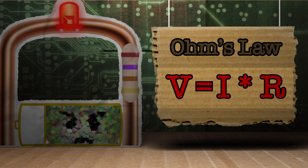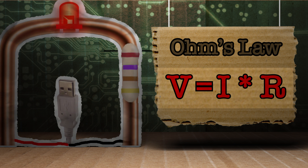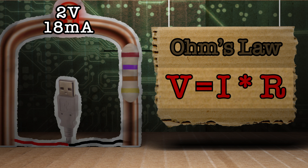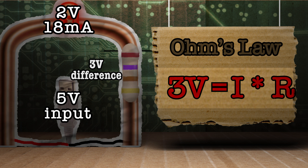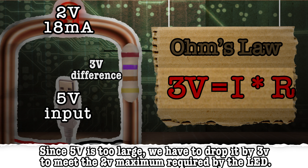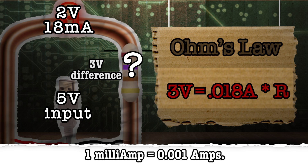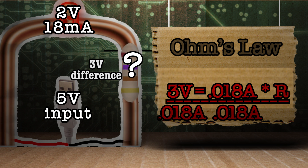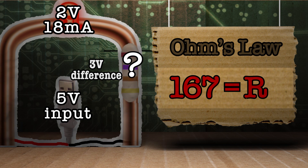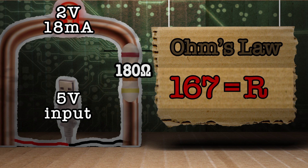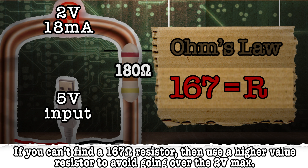Here's a more practical example. Let's say that we want to power our LED using a USB port. Now this red LED is rated for a max of two volts and 18 milliamps. A standard USB port outputs five volts — that's a three volt difference, meaning that it would burn out our LED. So we need to figure out how much resistance is needed to drop the voltage from five volts to two volts. Plugging in the numbers, we have to convert 18 milliamps to 0.018 amps and then divide both sides by 0.018. We end up with 167, so you would need the closest thing to a 167 ohm resistor to light the LED.